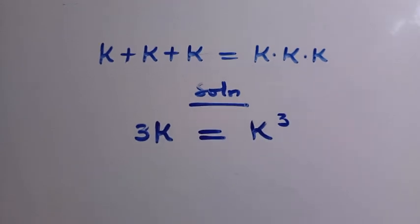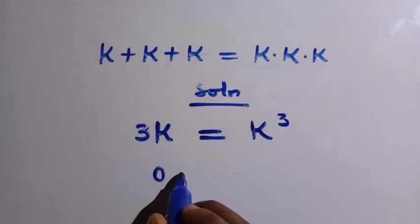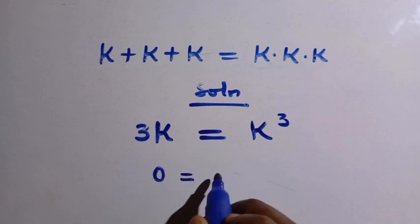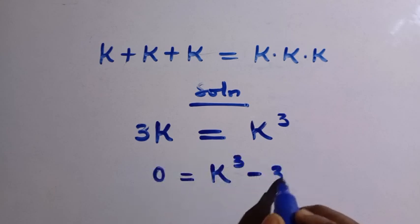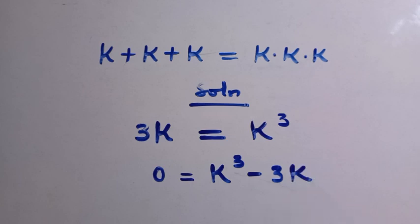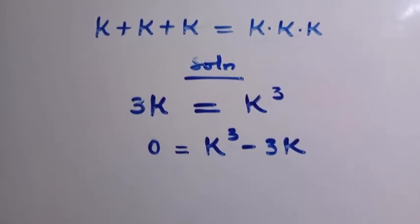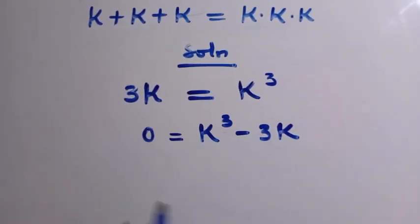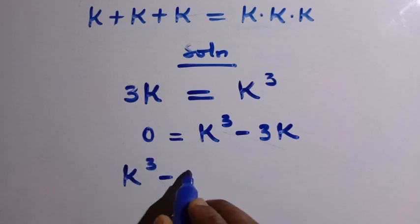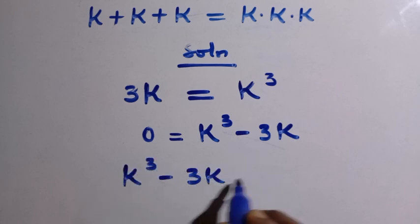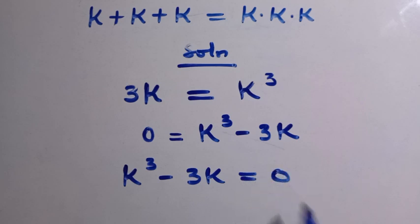And then if I take this one here, we are going to have 0 equals K raised to the power of 3 minus 3K. Let's try and rewrite this thing properly as K to the power of 3 minus 3K equals 0.